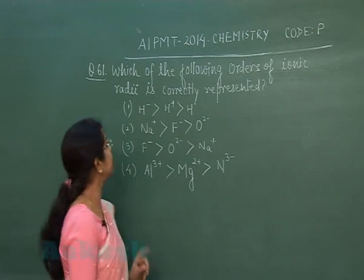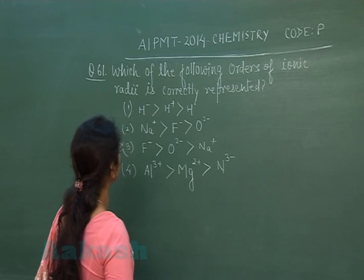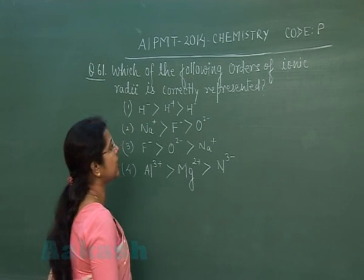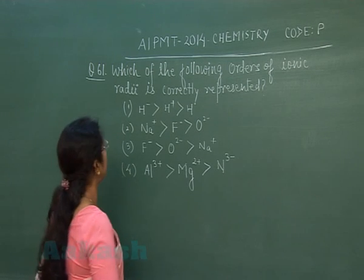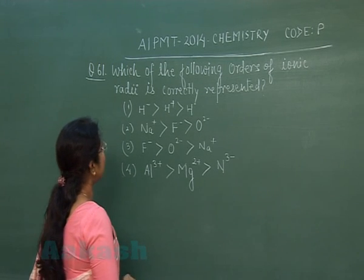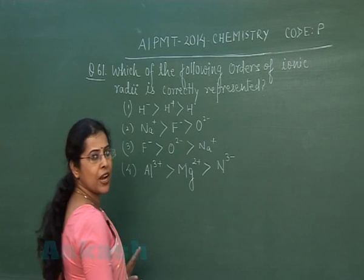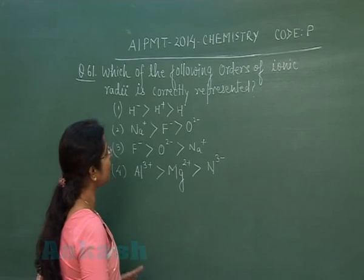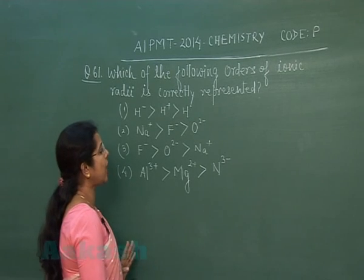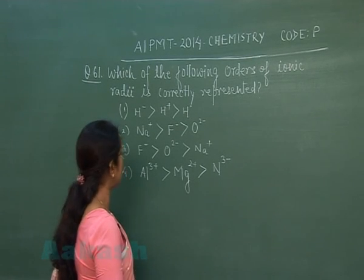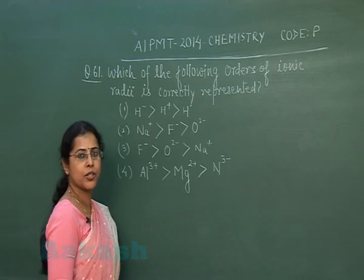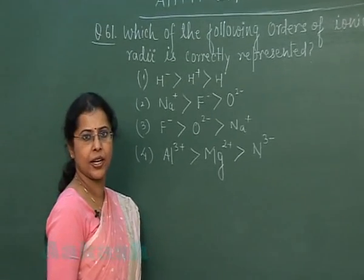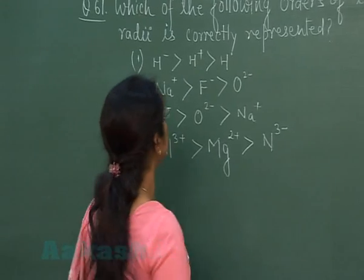Our next question is question number 61: which of the following orders of ionic radii is correctly represented? First option: H⁻, H⁺, H. Second option: Na⁺, F⁻, O²⁻. Third option: F⁻, O²⁻, Na⁺. Fourth option: Al³⁺, Mg²⁺, N³⁻. Let us try to solve this question.